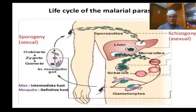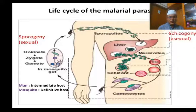The parasite multiplies in the RBC and forms a schizont — called an erythrocytic schizont or blood schizont. The malarial parasite multiplies here, and when the schizont ruptures, merozoites come out and again infect the RBCs; the cycle continues.